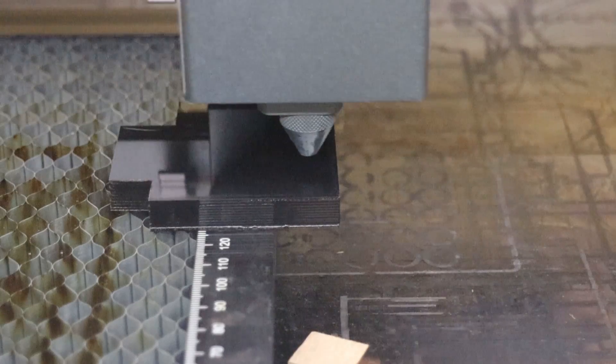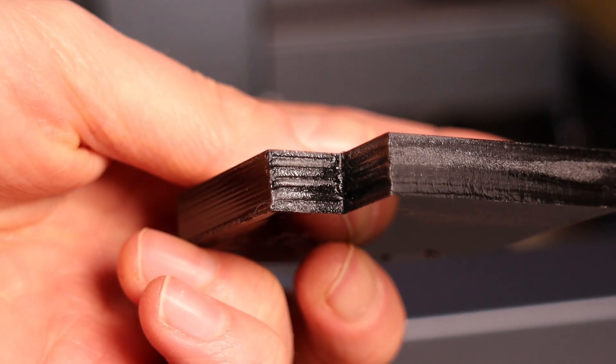Then I tried to cut 10mm thick acrylic and this machine was able to cut it in only 6 passes. This is an incredible result. For comparison, the 20W module needed 14 passes.